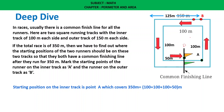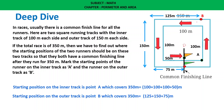Now let us see point B on the outer track. From starting point B: 125 meters, then 150 meters, then 75 meters. The total distance covered by B is 350 meters. So the starting position on the outer track is point B. Point A is on the inner track and point B is on the outer track, and both distances will be 350 meters.